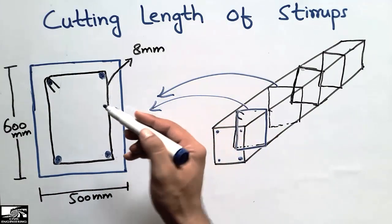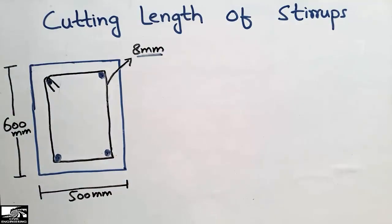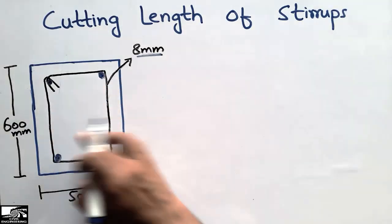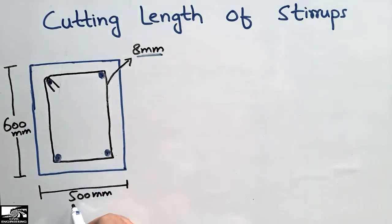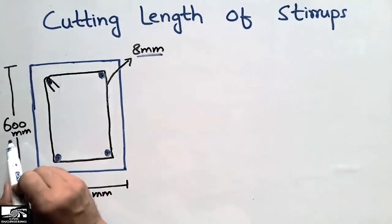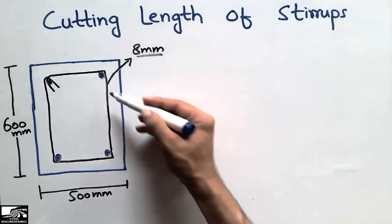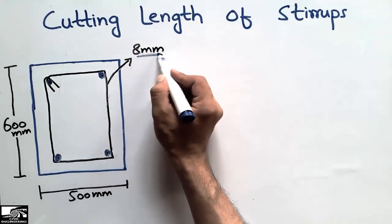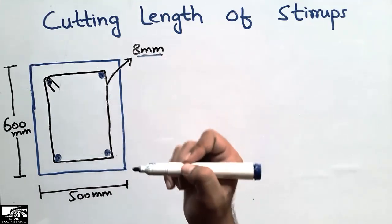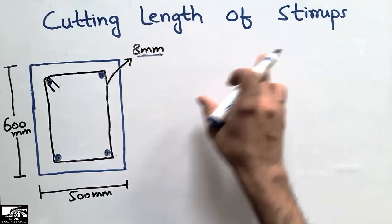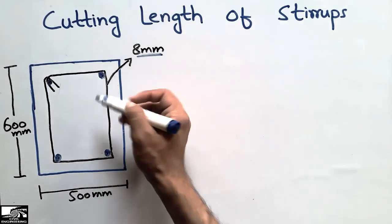We are interested to find the cutting length of the stirrups — how much length of stirrups is used in this beam. The dimensions given are: width of the beam is 500 mm, depth of the beam is 600 mm, and the bar used in the stirrups is 8 mm diameter.